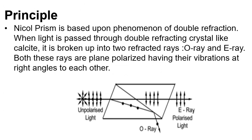Nicol prism is based upon the phenomena of double refraction. When light is passed through a double refracting crystal like calcite, it is broken up into two refracted rays: the O ray (ordinary ray) and the E ray (extraordinary ray). Both these rays are plane polarized, having their vibrations at right angles to each other.